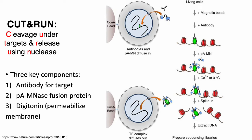Cells are harvested but not fixed with formaldehyde as they are for ChIP-seq. They're bound to magnetic beads attached to solid support. The cell membranes are made permeable, allowing the antibody to diffuse in and find its target, and then the fusion protein diffuses in. Because protein A binds strongly to antibodies, the protein A helps localize the MNase close to where the antibody target is, ultimately leading to the MNase making cuts on either side of the target. Since the nuclei weren't cross-linked, the cleaved fragments diffuse out and get sequenced at the end of the protocol.